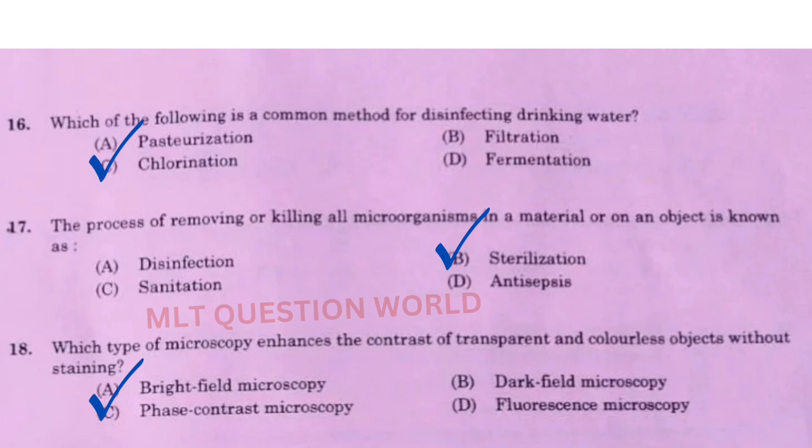Next: The process of removing or killing all microorganisms in a material or object is called option B, sterilization. Next question: Which type of microscopy enhances the contrast of transparent and colorless objects without staining? The right answer is option C, phase contrast microscopy.